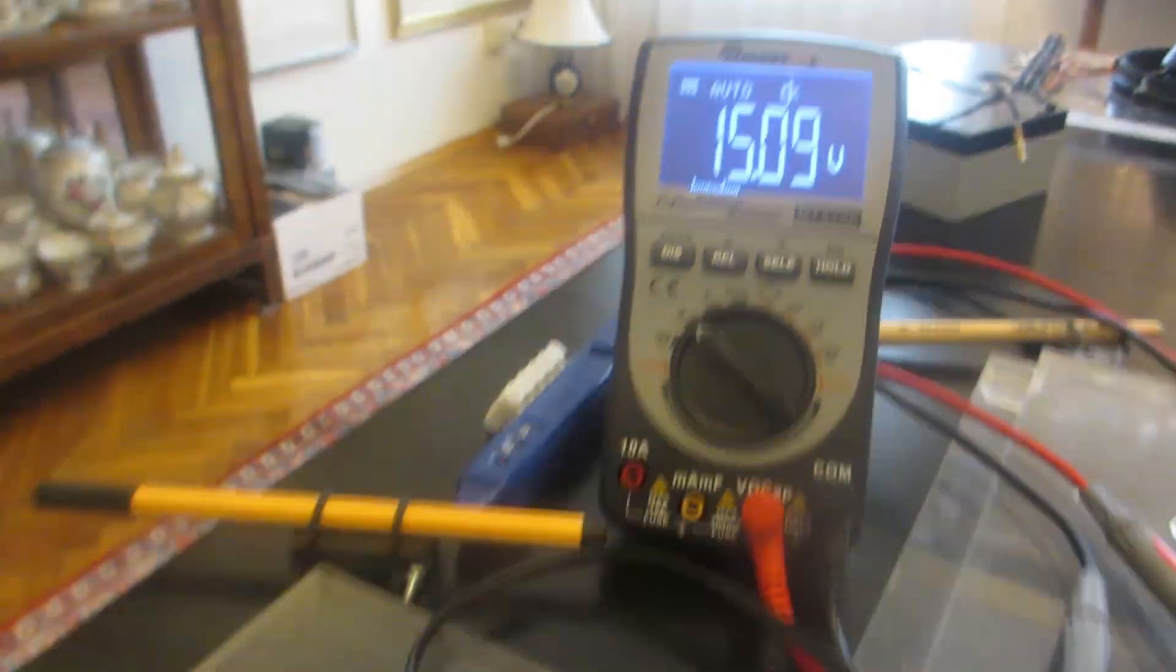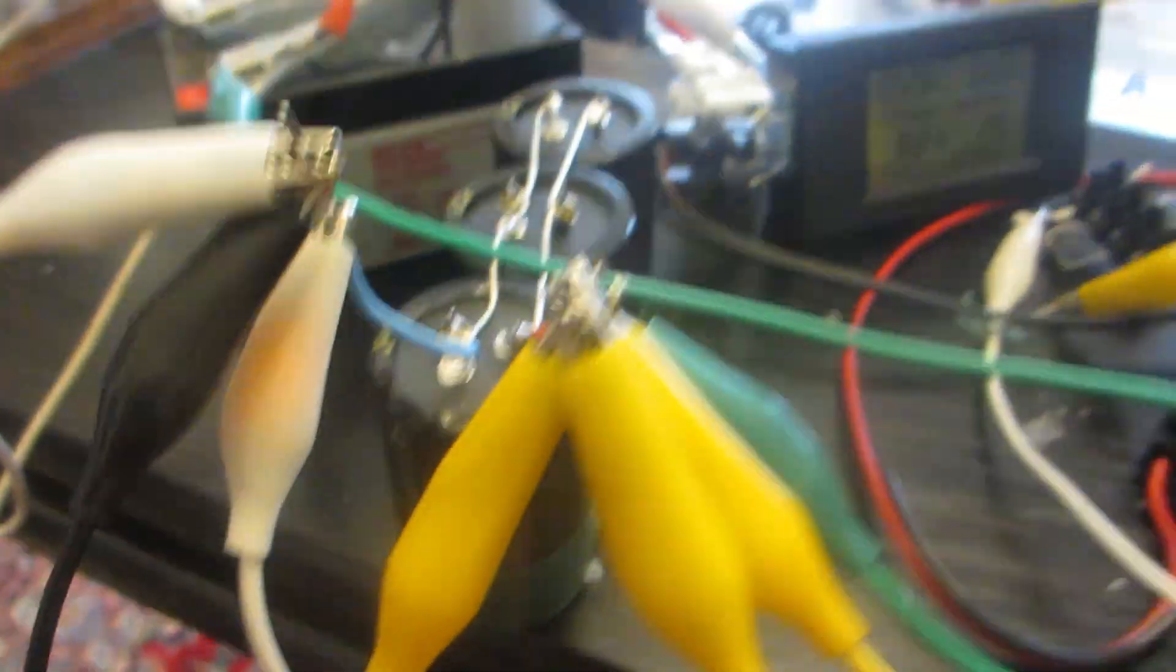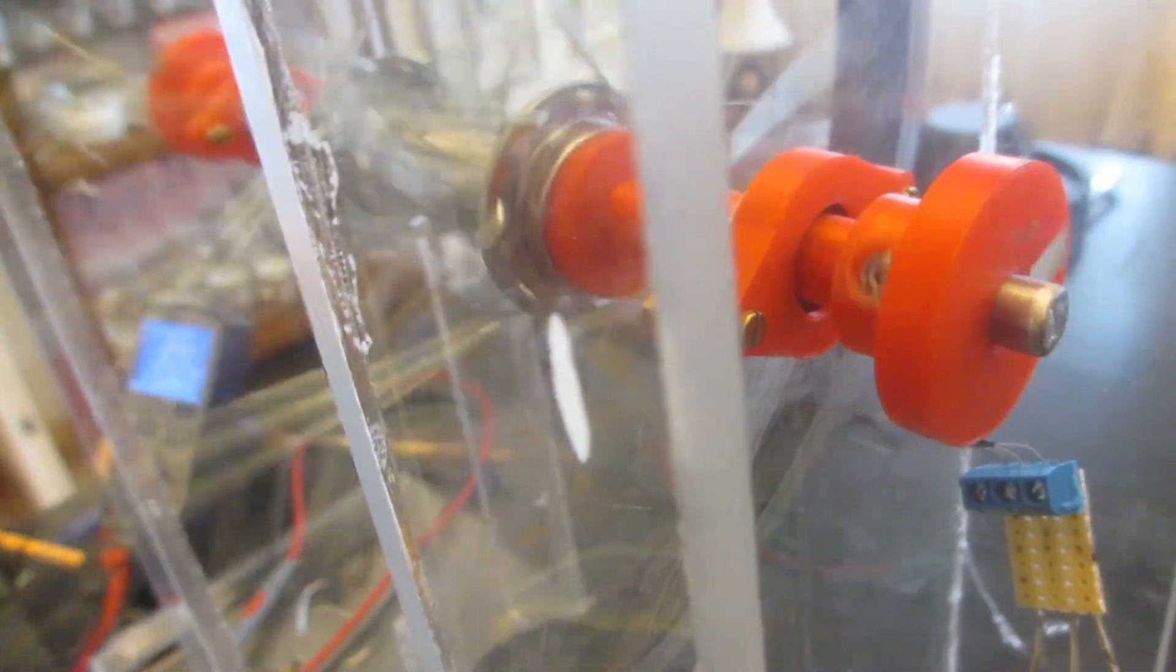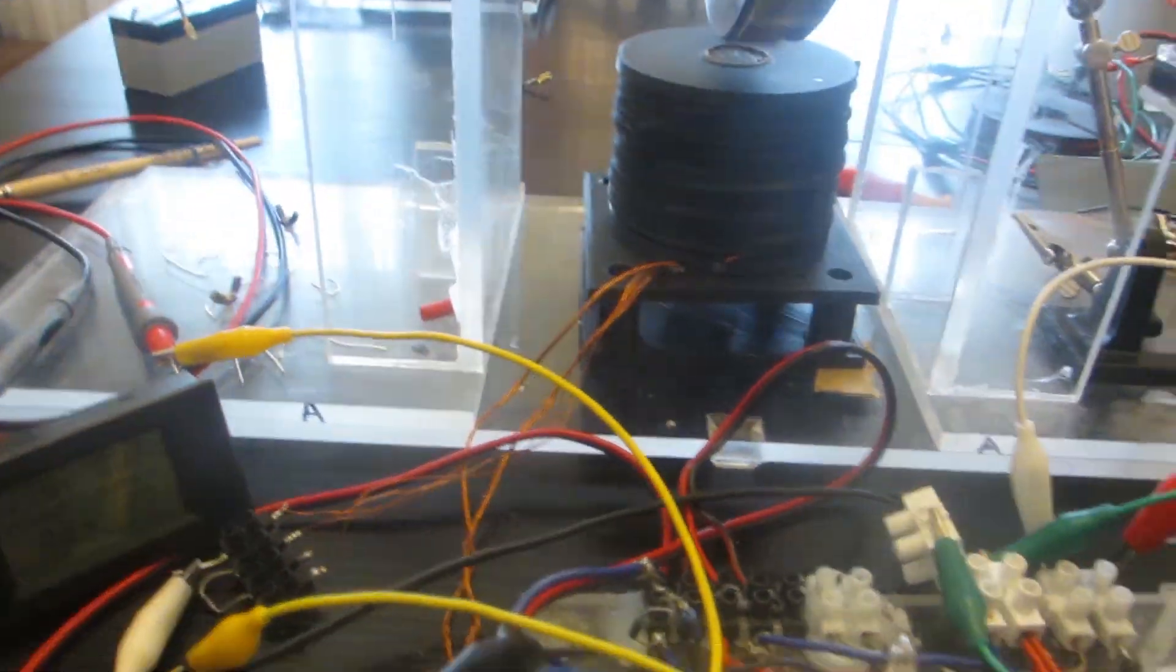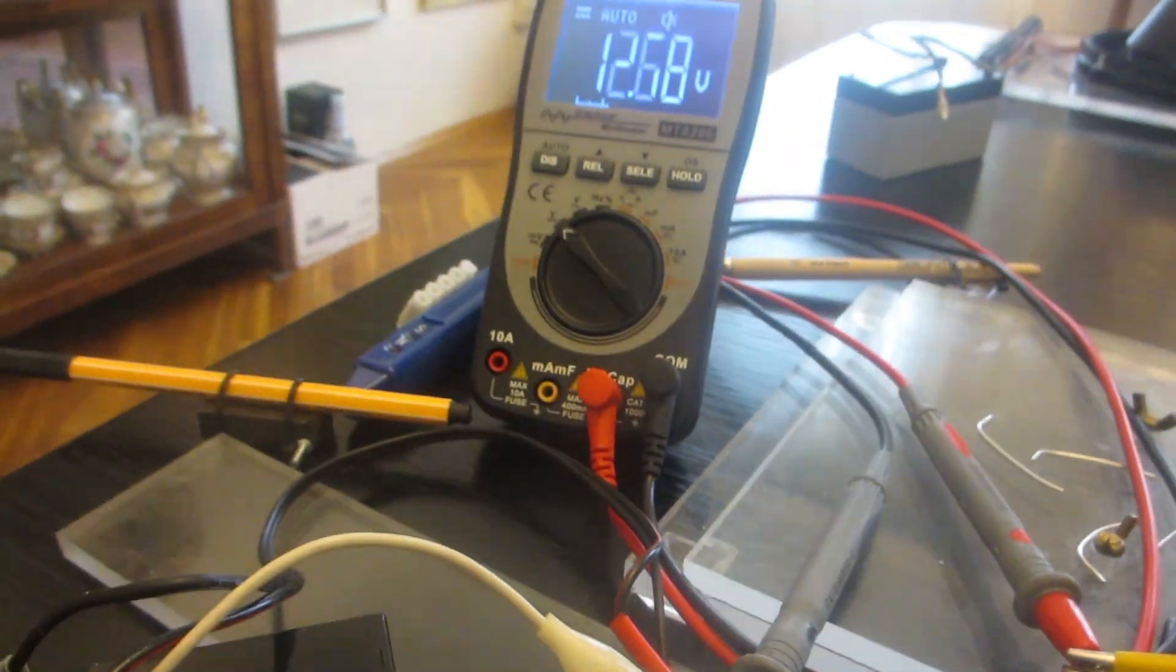That's the cap. It charges and goes into there. It's a 1.2 amp hour battery. Yeah, it's pretty quick but it's once per revolution. And that's the cap pulsing.